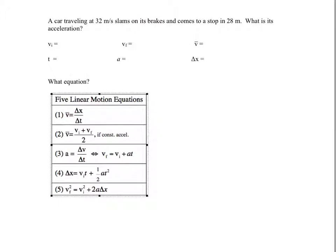So here's another problem, and this problem, similar idea. We try to identify the variables. So a car traveling at 32 meters per second, so that's a velocity. What velocity is it? Well, it is the starting velocity because that's what it's doing right now. So that's vi, it's 32 meters per second, slams on its brakes and comes to a stop. So its final velocity will be 0 and 28 meters.